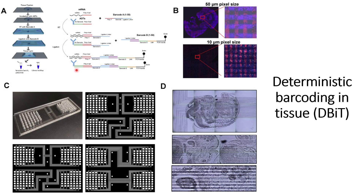Now the mRNA molecules will have the complementary mRNA sequence along with barcode A and barcode B, and these are also biotinylated to help in the purification of the cDNA. The antibody-derived barcode tag will also have the complementary DNA sequence, barcode A, barcode B, and a unique molecular identifier. The complementary mRNA sequence also has a unique molecular identifier, and PCR handles are attached which are biotinylated to help in purification.